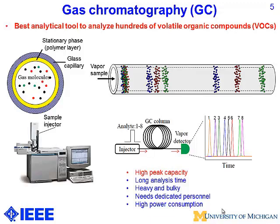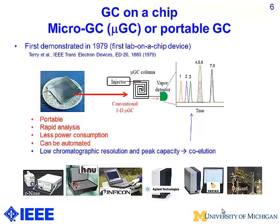The principle of GC is that you inject analytes in a pulse format, they travel along the column, and they get separated — so eight analytes in gives eight peaks out, each representing one analyte. The advantage of a large GC is a very large peak capacity, meaning you can separate hundreds of analytes. However, it takes extremely long time — usually hours — it's very heavy and bulky, needs dedicated personnel, is in a centralized lab, and consumes lots of power. For field applications, we need a micro-GC.